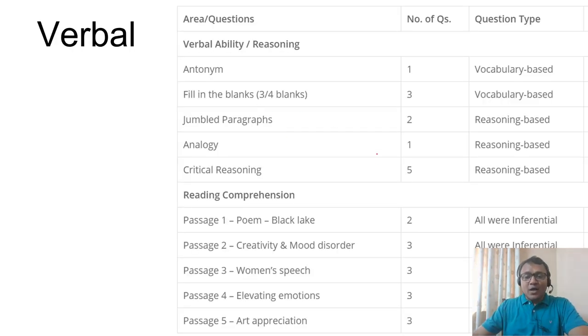Coming to verbal, RC becomes important like the CAT paper. A lot of weightage on RCs, but you also have critical reasoning which is important. Five questions over 26. Be aware of critical reasoning. Reasoning-based questions are more important. People remember vocabulary-based questions because vocab questions are difficult, but there are not many questions. Maybe one or two questions can be difficult because of a word. Don't focus too much on vocabulary and grammar.